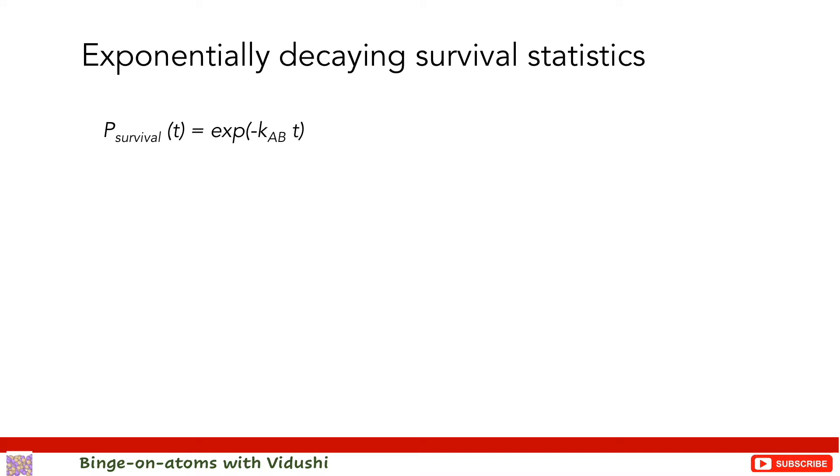While a system is in state A, each time it has the same probability of finding an escape path as it had in a previous increment of time. This gives rise to a first-order process with exponential decay statistics. The probability of survival is the probability that the system has not escaped from state A at time t. The KAB here is the rate of escape from system A to B.